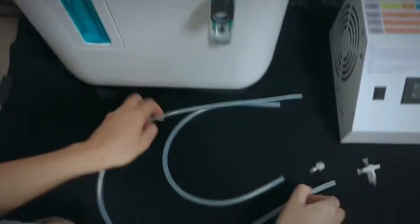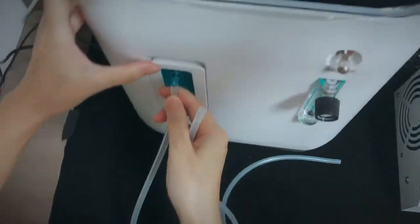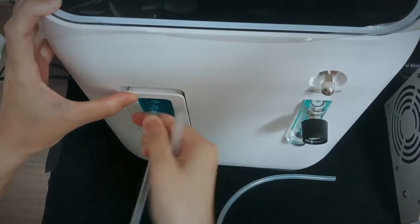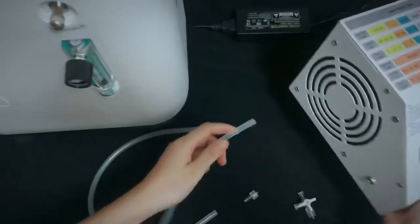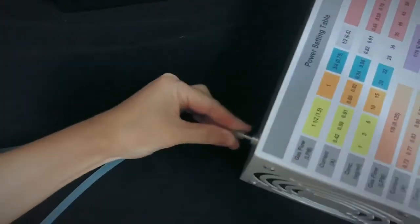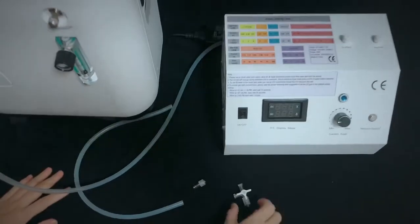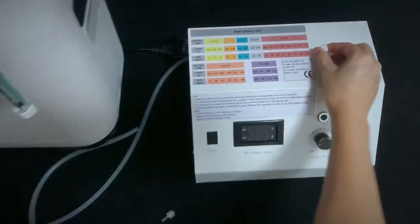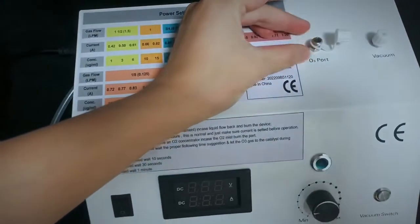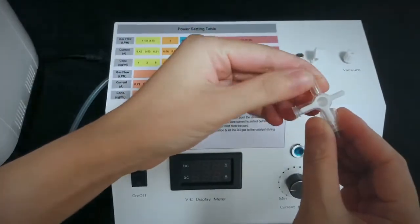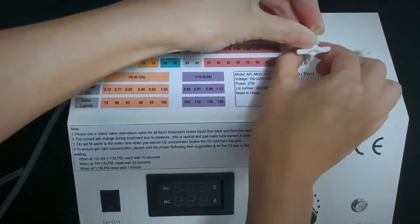Then you need a tube to connect it to the oxygen outlet, and the other side connect it to the oxygen inlet of the device. Open the cap of the O3 port and use the three-way stop cord to connect here.